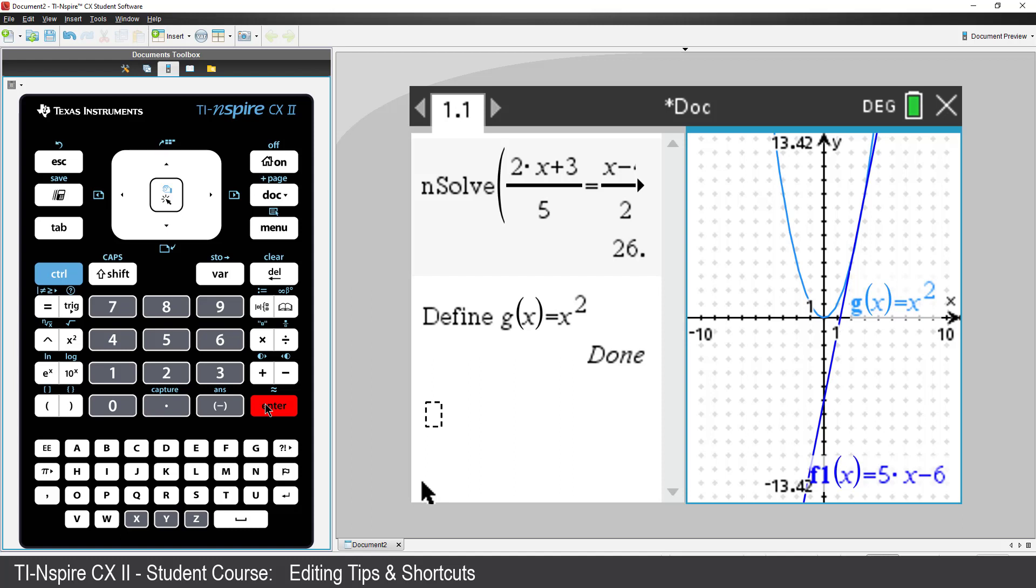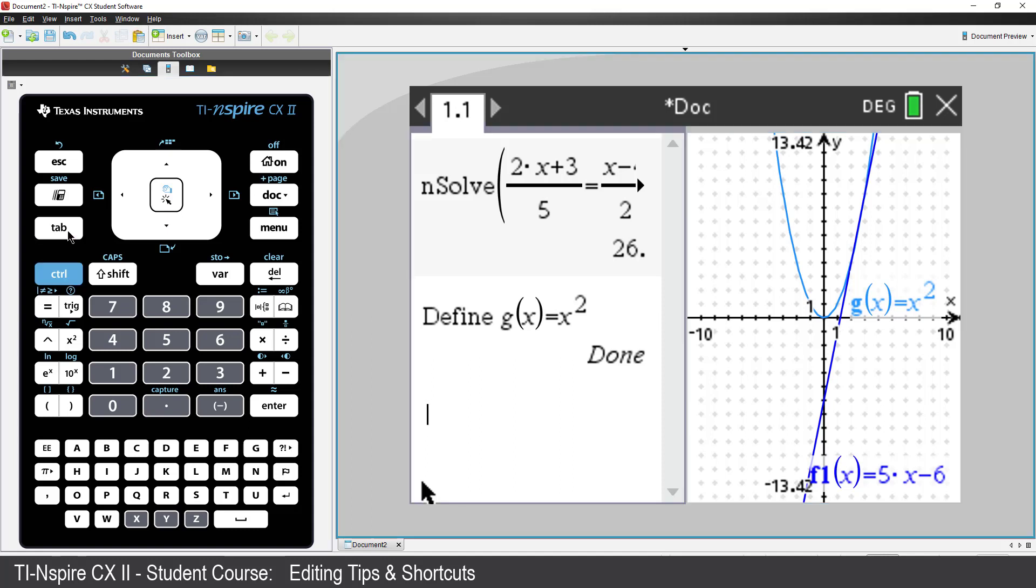There are a couple of ways to find the points of intersection. Notice that the Graphs application is still highlighted. To swap across to the calculator application, I could move the mouse and click, or press CTRL-TAB, which is just like ALT-TAB on a PC, to switch focus between windows.